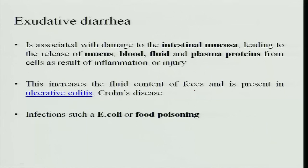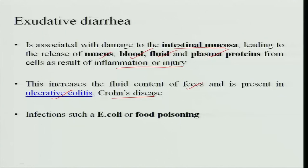Exudative diarrhea is another type caused by intestinal mucosal damage. There is release of mucus, blood, fluid, and plasma proteins from the cells lining the mucosa, resulting in inflammation or injury. This increases the content of feces and leads to ulcerative colitis, or in Crohn's disease — which is inflammation of the entire intestinal wall — ulcers form in parts of the intestine and all these contents are lost through the feces. Infections such as E. coli or food poisoning also cause exudative diarrhea.